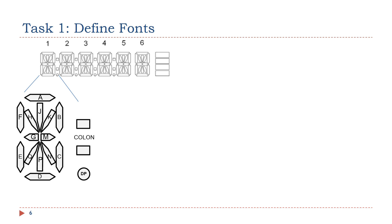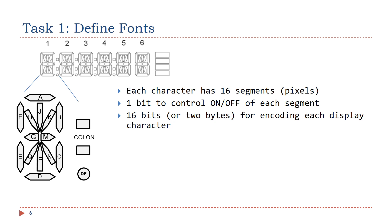On the STM32L4 discovery kit, the LCD glass can display six characters. Each character has 16 segments, such as segment A, segment B, segment C, and so on. Suppose we use one bit to represent the on or off setting of each segment; we need a total of 16 bits to encode all segments of a character.